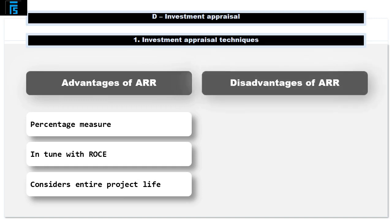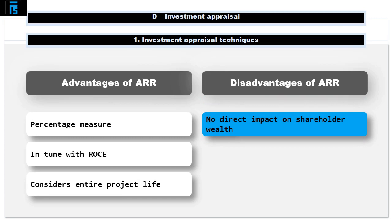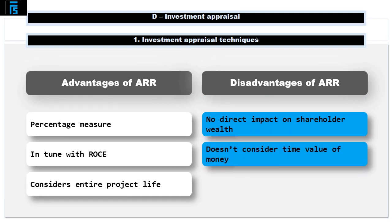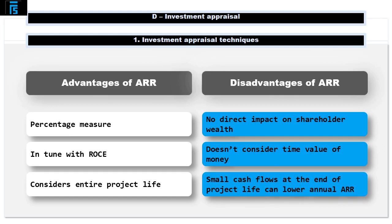However, there are several serious disadvantages associated with this technique. As a percentage measure, it does not give us a direct measure of the impact on shareholder wealth from taking on the project. It doesn't take into account the time value of money — the fact that money received later is actually worth less than money received today. Also, if there's a small trickle of cash flows at the end of the project for a few years, this can unreasonably drive down the ARR measure. For example, if we had an extra 10 years earning $1 a year, this would drive down the average accounting profits, even though those cash flows are completely insignificant to the project. As we've seen, there are good reasons why ARR is a common measure, but be aware that it has several serious theoretical flaws.